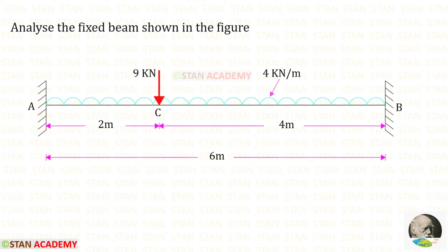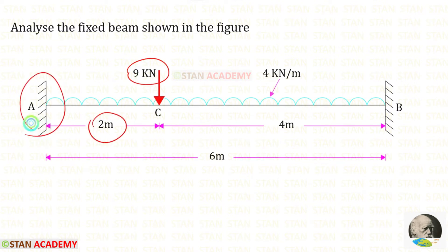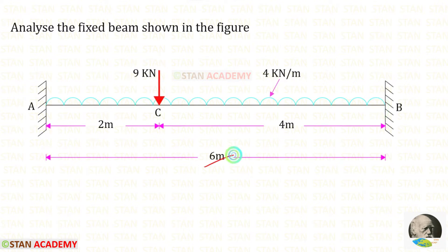Hello everyone. Today we are going to analyze this fixed beam using the consistent deformation method. In this beam there are two loads: one point load of 9 kilonewton acting at a distance of 2 meters from point A, and a uniformly distributed load of 4 kilonewton per meter acting for the whole span. The length of the beam is 6 meters.